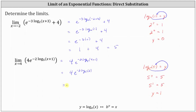Going back to our work, we have four times e raised to the power of negative two times one, or just negative two. Applying the negative exponent rule — a to the power of negative m equals one over a to the power of positive m — four times e to the power of negative two is equal to four divided by e squared.